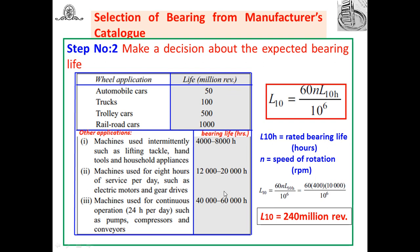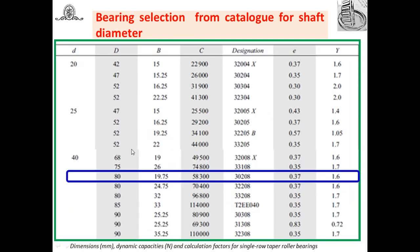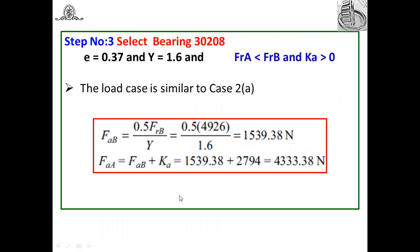If the life is not given, refer to the chart to decide life in million revolutions. The shaft diameter is 40 mm. From the manufacturer's catalog I am selecting bearing number 30208. Its outer diameter is 80 mm, width is 19.75 mm, dynamic load capacity C = 58,300 N, designation 30208, e = 0.37, and Y = 1.6.